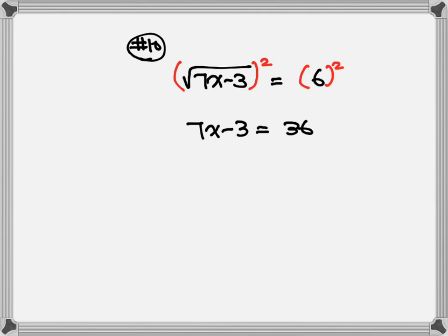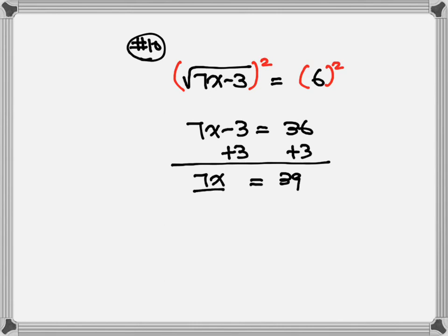After that, I'll solve for x. Let's get rid of the negative 3: plus 3 on both sides. So, 7x is equal to 39. Then, we want x by itself, so divide everything by 7. x is equal to 39 over 7.